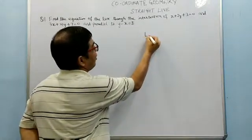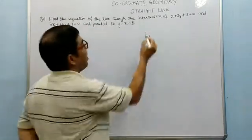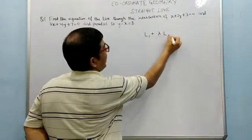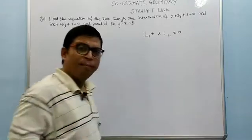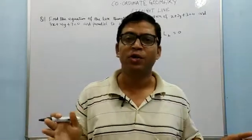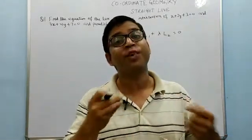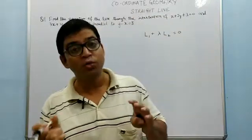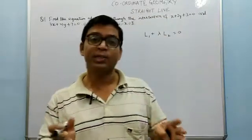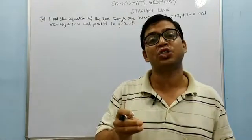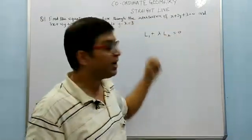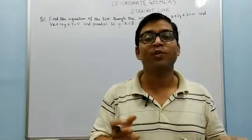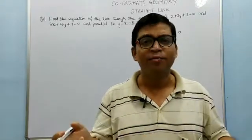By putting different values of lambda we can get different sets of lines. So if we have to find a particular line passing through the intersection of two lines, we get the particular value of lambda by means of the given conditions, and we will get that particular equation.